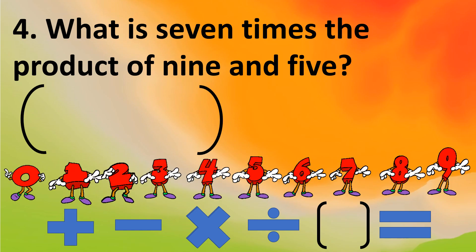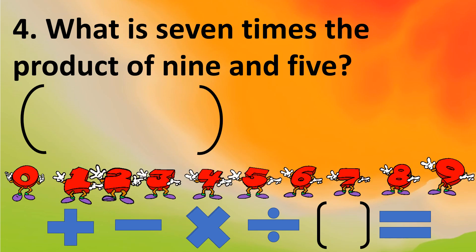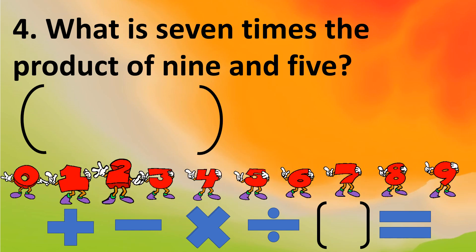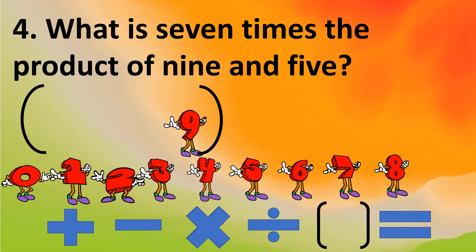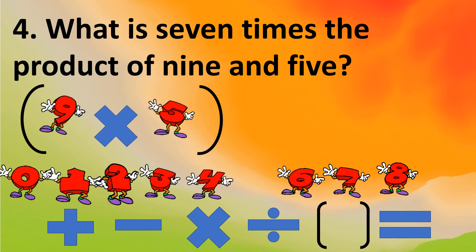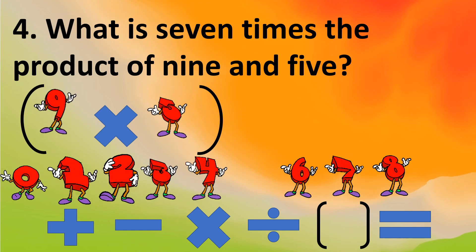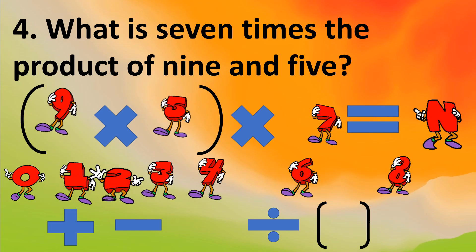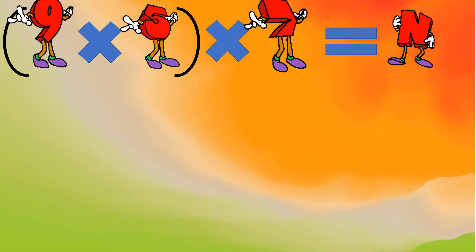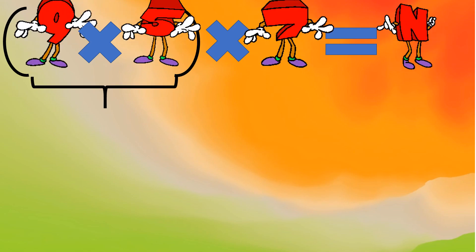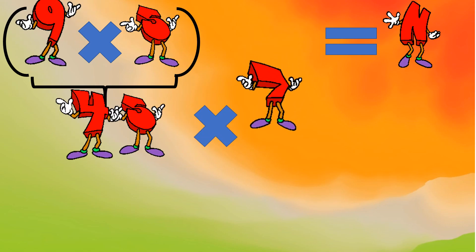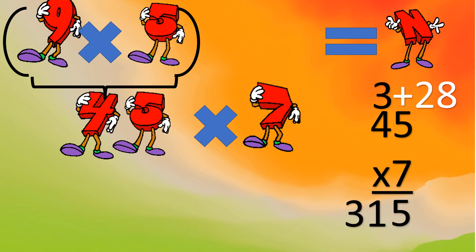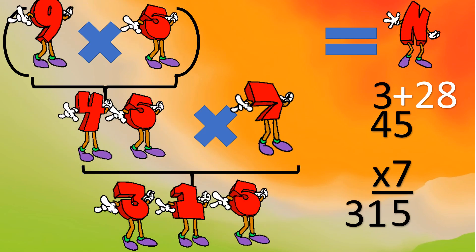Number 4: What is 7 times the product of 9 and 5? We have the combination — the product of 9 and 5 — so write parentheses first: (9 × 5). Then times 7 equals N. To solve: 9 times 5 is 45, then bring down the remaining operation — 45 times 7 equals 315. So N is 315.